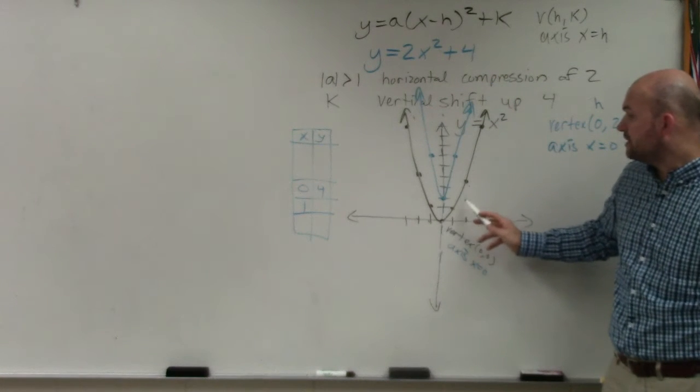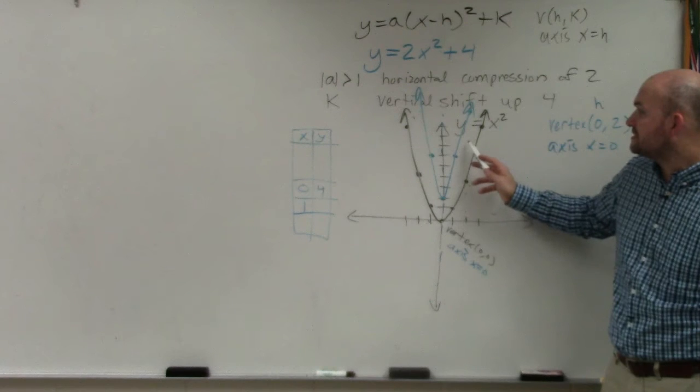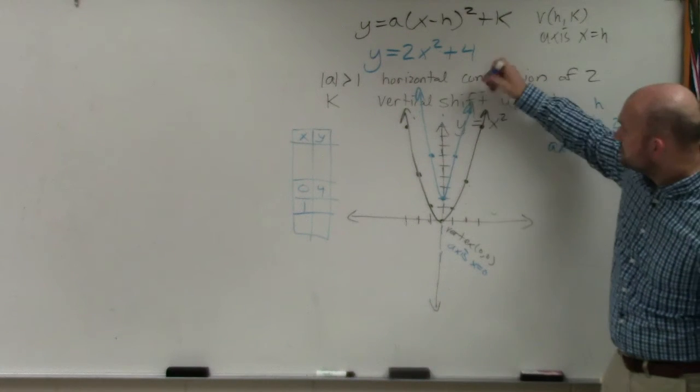So when I go over 2, I'm going 1, 2, 3, 4, 5, 6, 7, 8, 9, 10, 11, 12. It's actually a little bit higher.